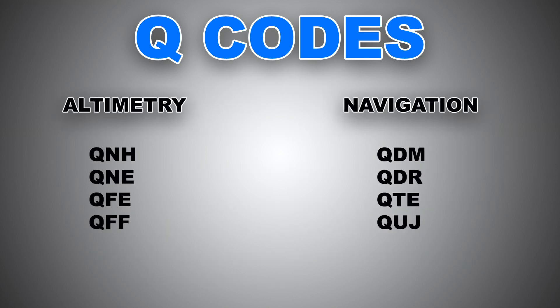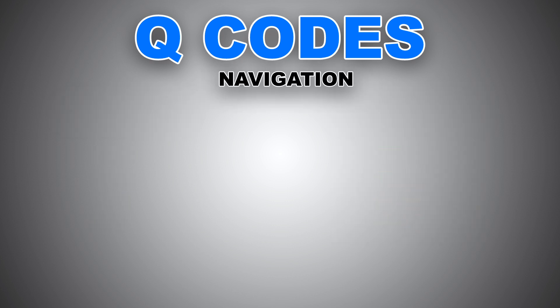Alright guys, now let's jump to the navigational Q-codes. When it comes to navigation, there are four Q-codes every pilot needs to know. However, only two of which are commonly used nowadays. And by the end of this part, I will give you a trick on how to remember the difference between them and never confuse them again.